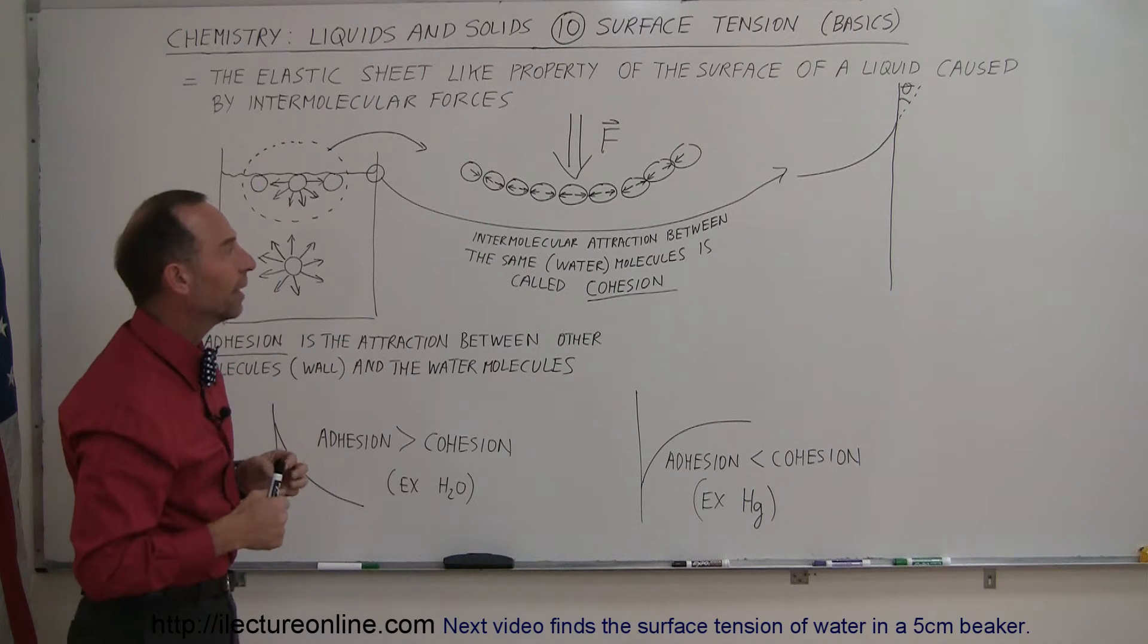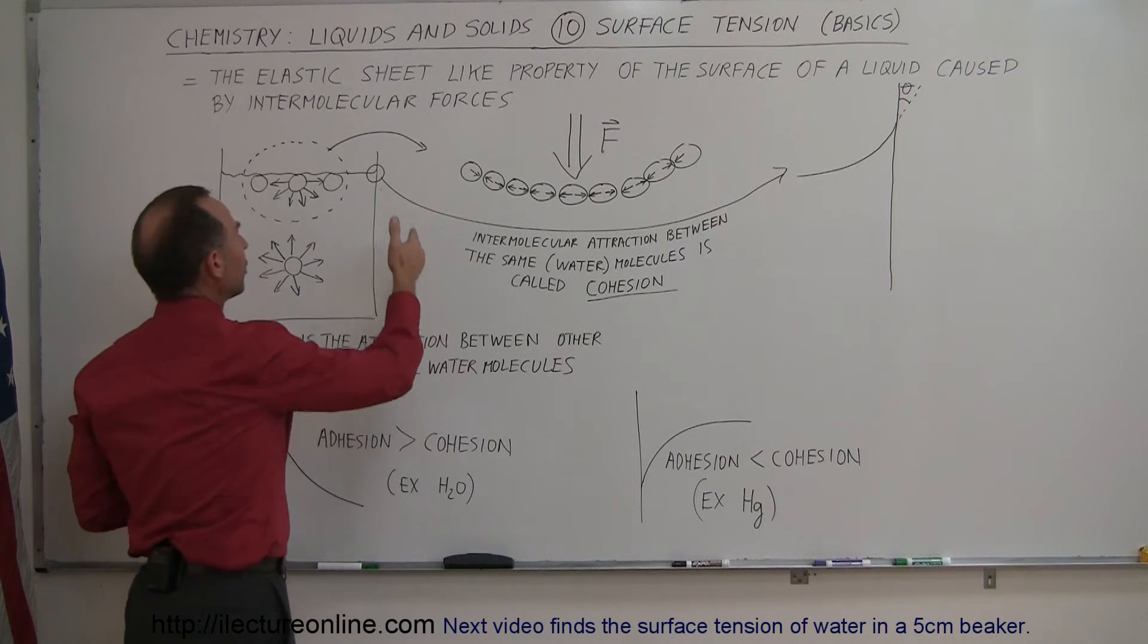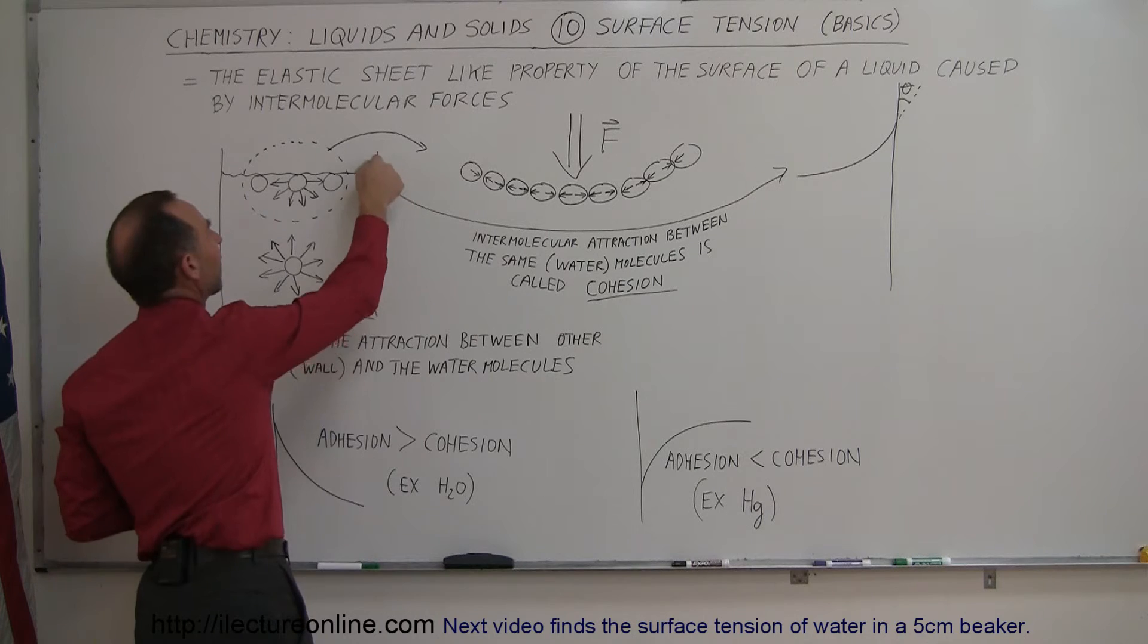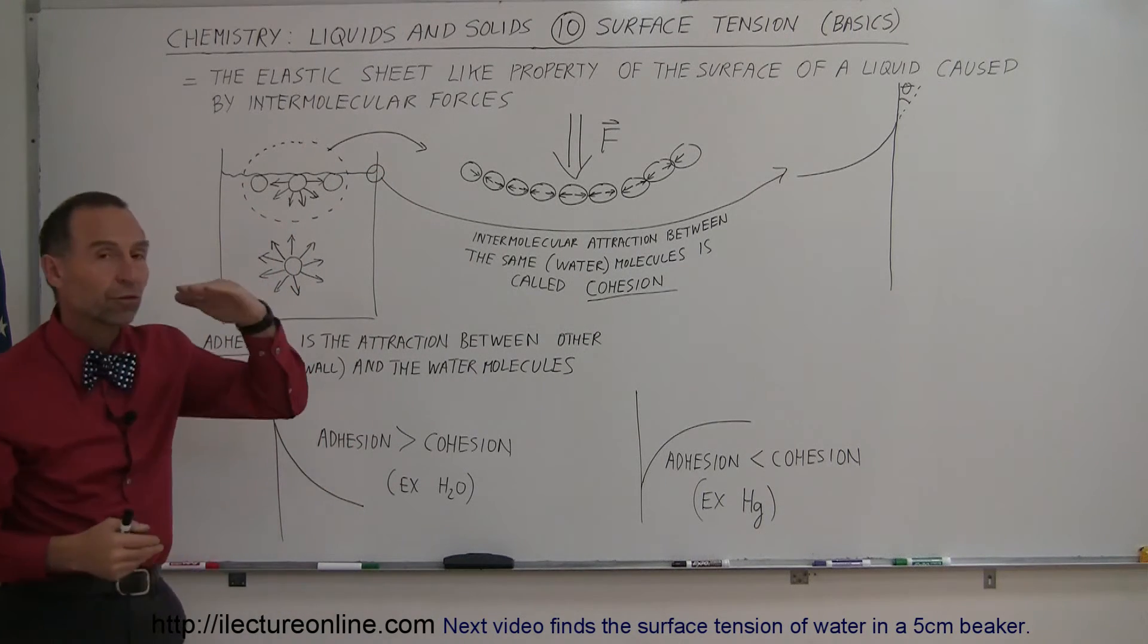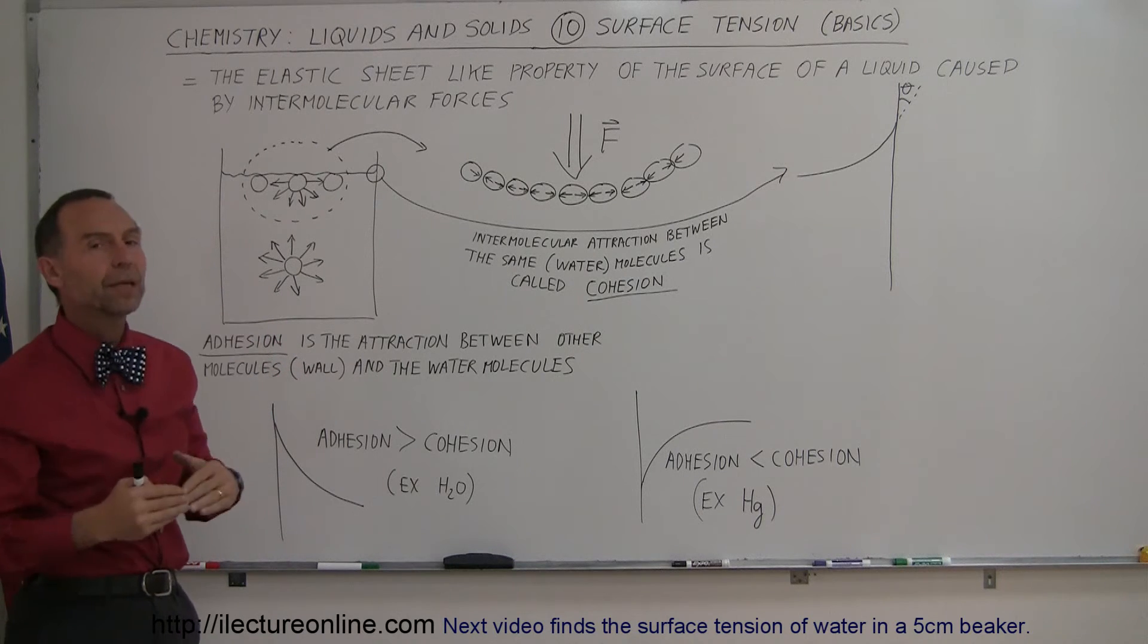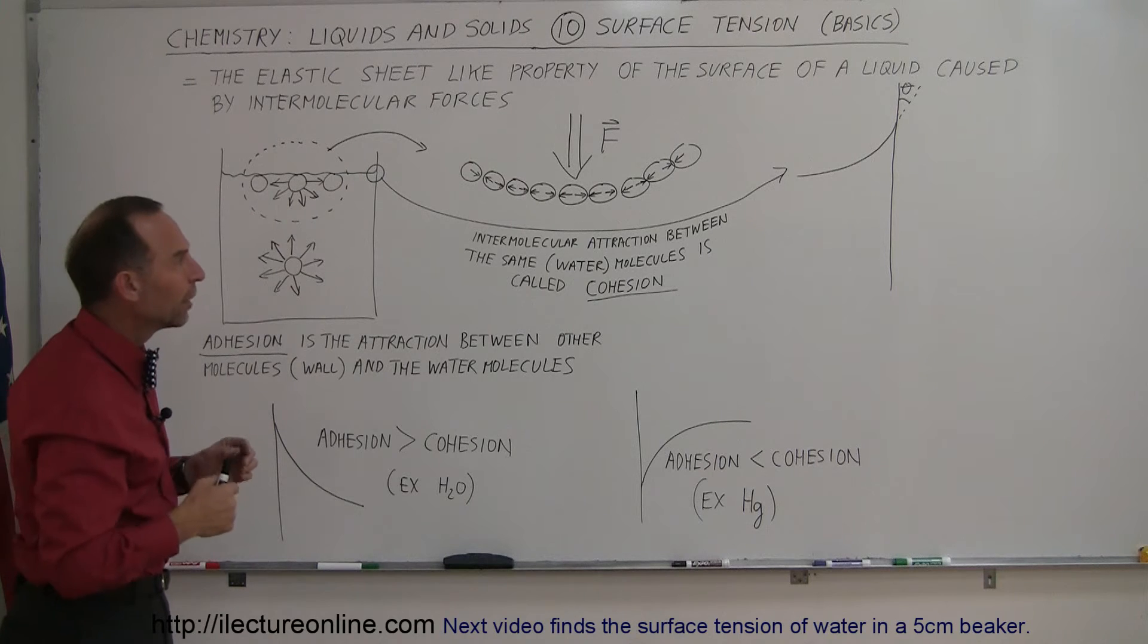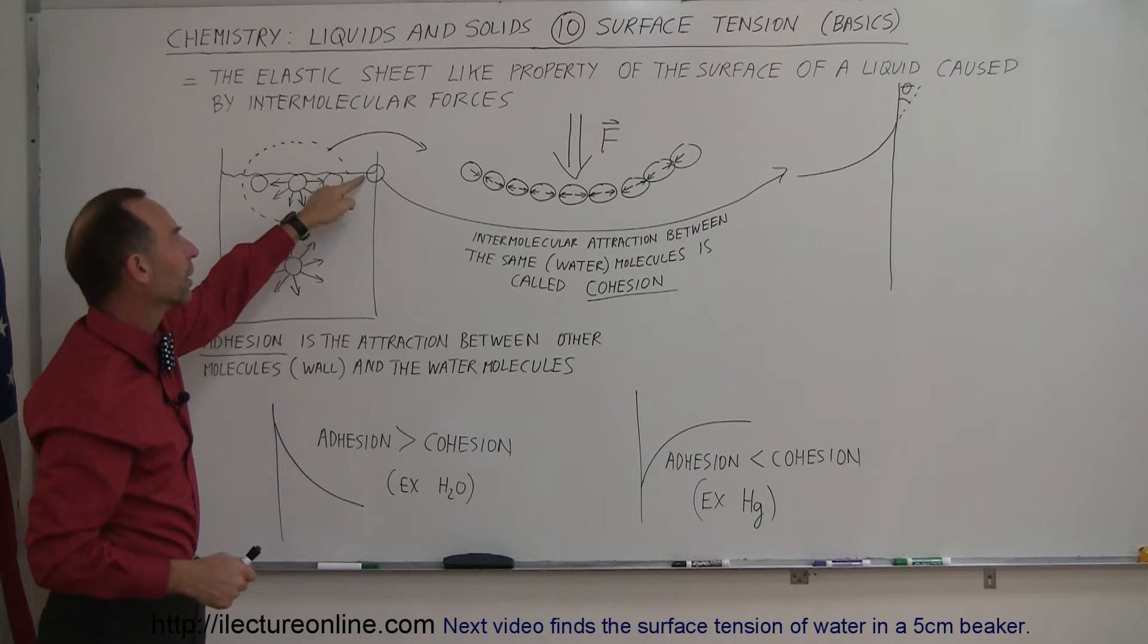When you look at the side of a beaker, you can sometimes see a meniscus. Those of you who work in chemistry labs measuring the volume of liquid inside a beaker or graduated cylinder will find that at the very edge there's a little lip where the liquid seems to go up.